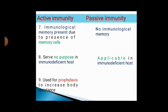Active immunity is used for prophylaxis — that is, treatment or action taken to prevent disease — in order to increase the body's resistance. Whereas passive immunity is used for treatment of acute infection.